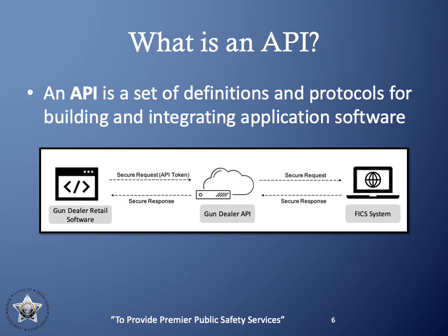Looking at the diagram, we can see three different icons. Starting from the left, the first icon represents the gun dealer retail software or point of sale system at each gun dealer location. In the middle, the icon represents the API, which allows the gun dealer's point of sale application to integrate with the FIX system. On the right, the icon represents the FIX system where background checks, firearm checks, and transactions occur. The API delivers a user request to the FIX system and sends the response back to the gun dealer retail software.